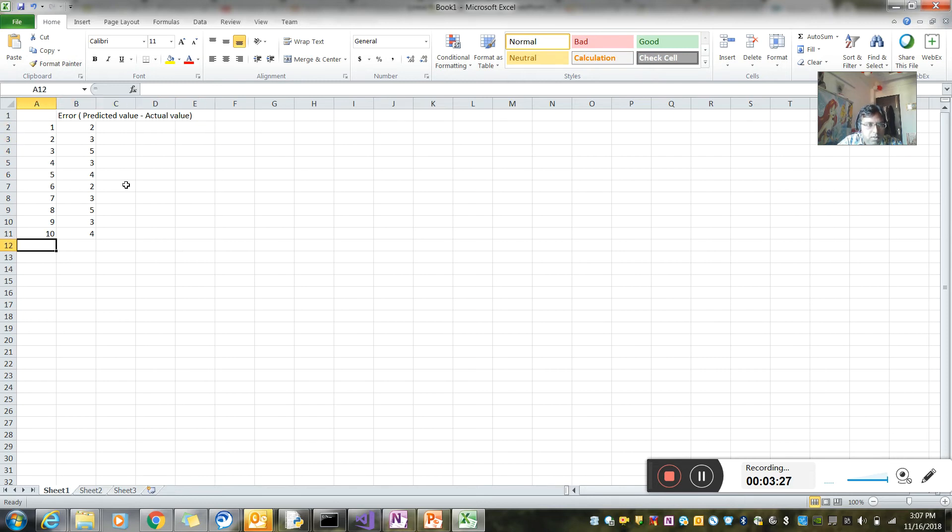Now, if I need to calculate MAE, this is nothing but I take the sum of these errors and divide by the number of samples, which is ten. So this is my MAE value. That is how we actually calculate the MAE.